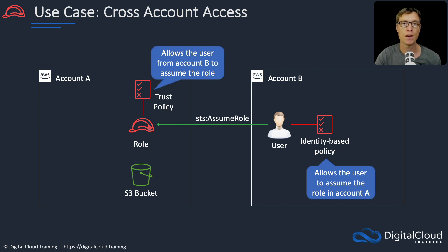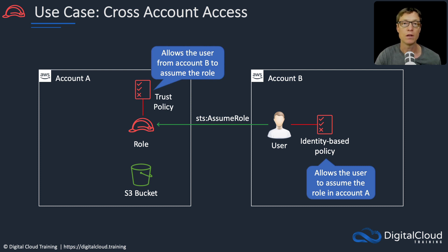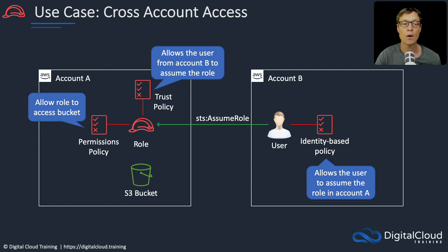You can either have this configured the way it was with the role in AWS Organizations — that role allowed anybody in the other account by specifying the account number — or you can lock it down to specific identities. The role also needs a permissions policy, and the permissions policy will allow the role to access the bucket to read, write objects, whatever it is you need to do. And then the user is able to access the S3 bucket through that role.